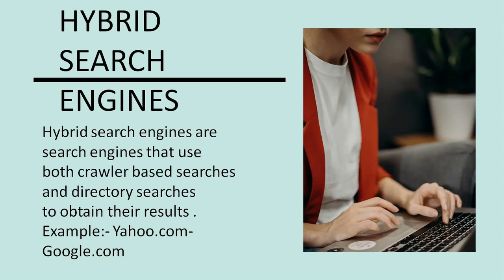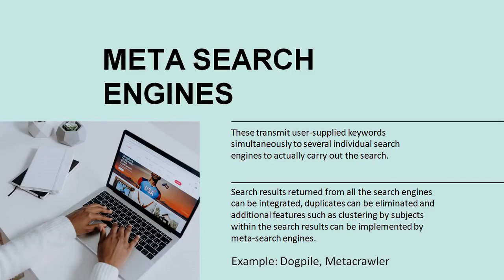Meta search engines transmit user-supplied keywords simultaneously to several individual search engines to carry out the search. Results returned from all the search engines can be combined, duplicates can be eliminated, and additional features such as clustering by subjects can be implemented. Examples of meta search engines are Dogpile and MetaCrawler.